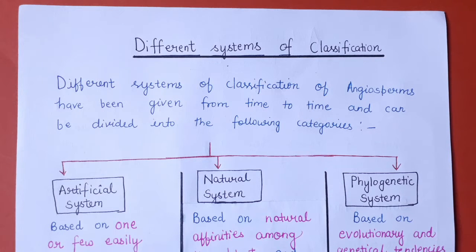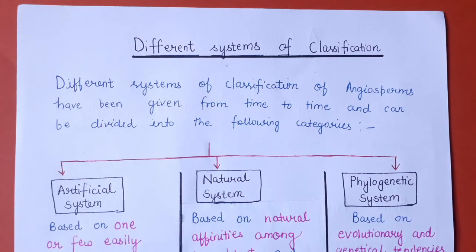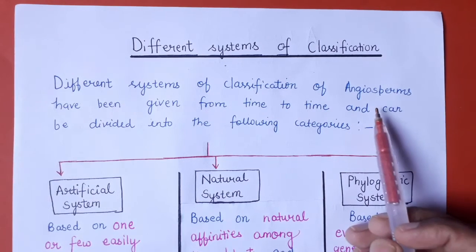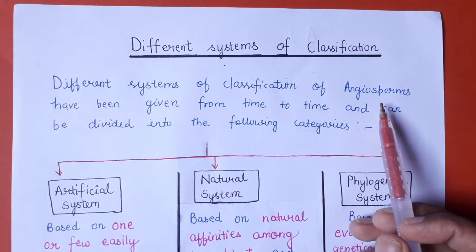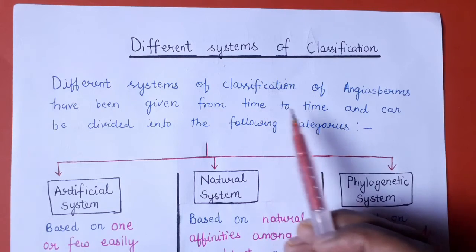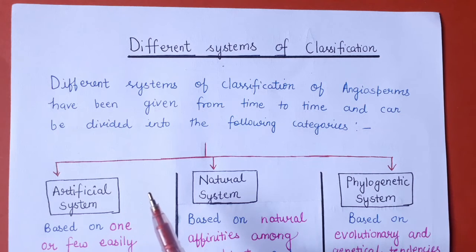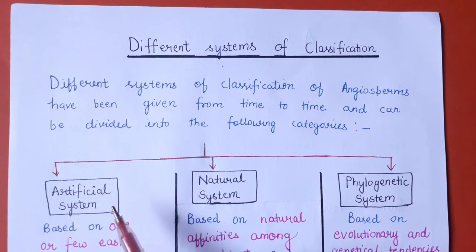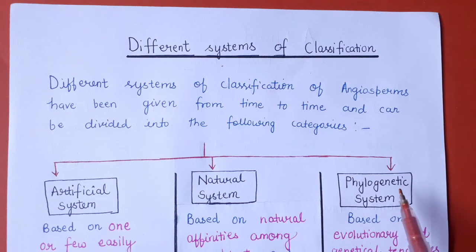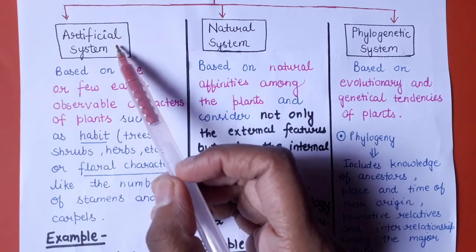Hello everyone, welcome to my channel all about biology. This is Jyoti Verma. Today we will discuss the different systems of classification of the angiosperms. Angiosperms have been classified into different categories according to different systems proposed from time to time. In this video, we will discuss three basic important systems: artificial system of classification, natural system of classification, and phylogenetic system of classification.